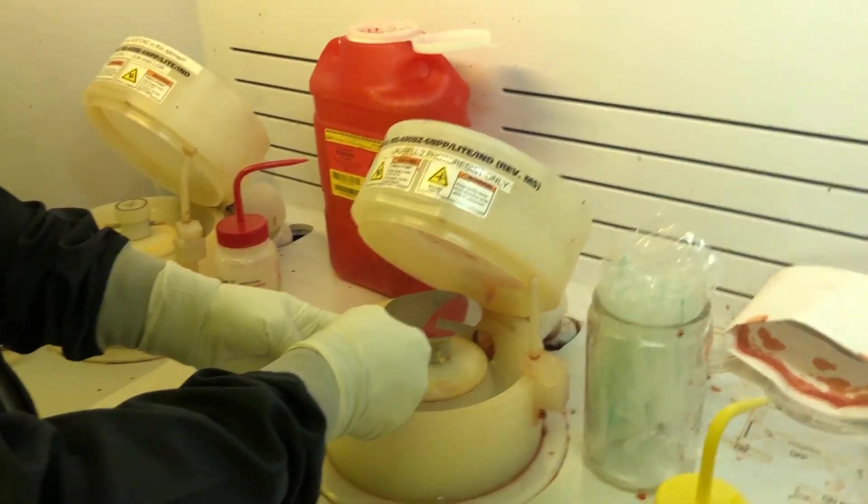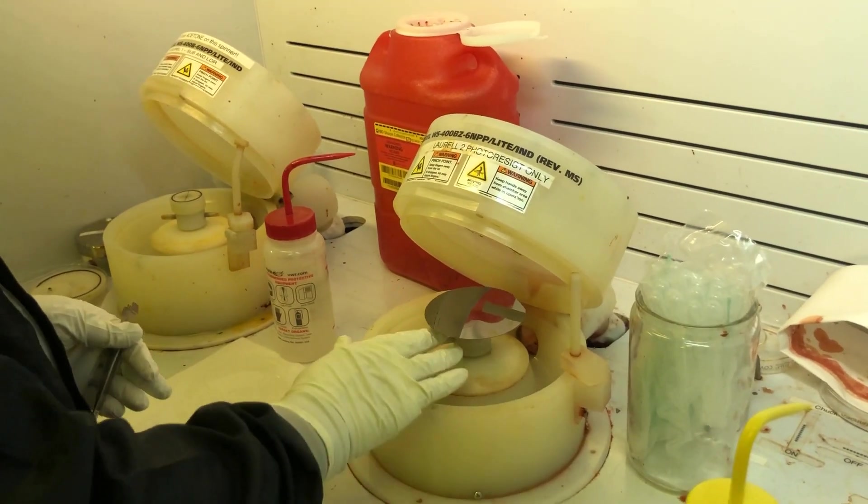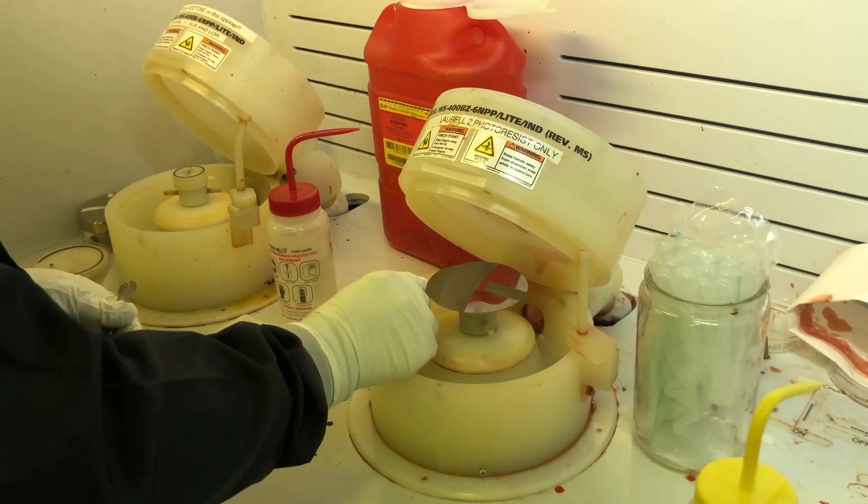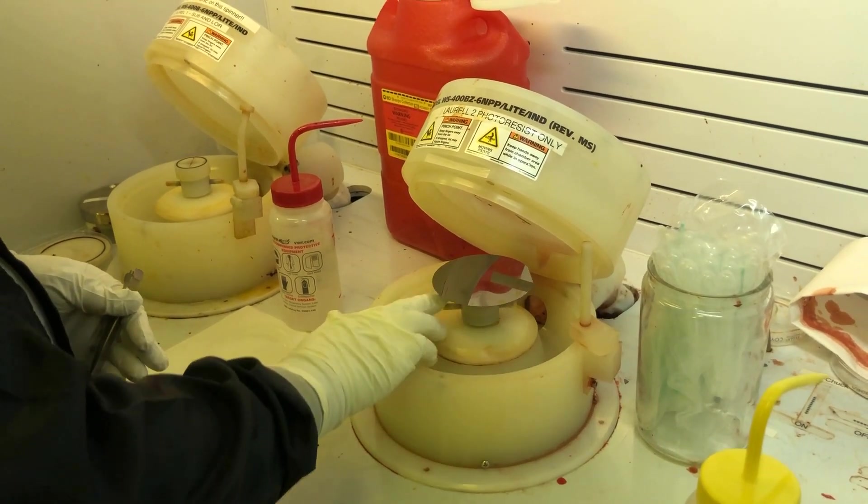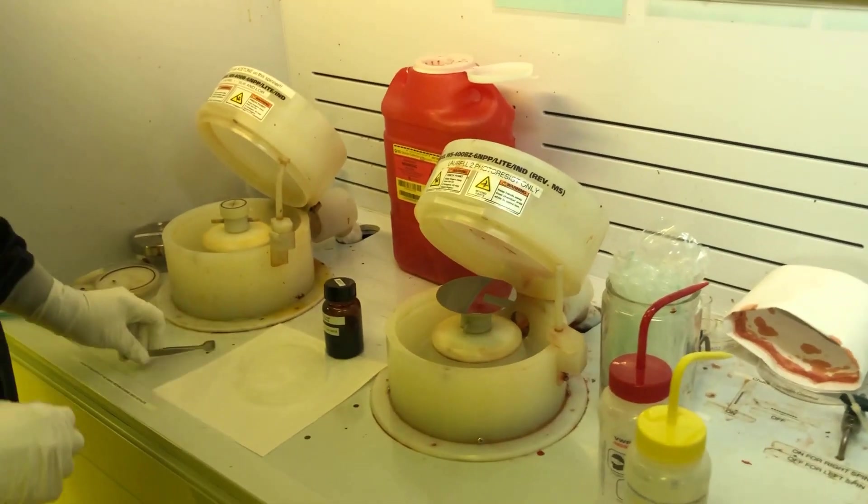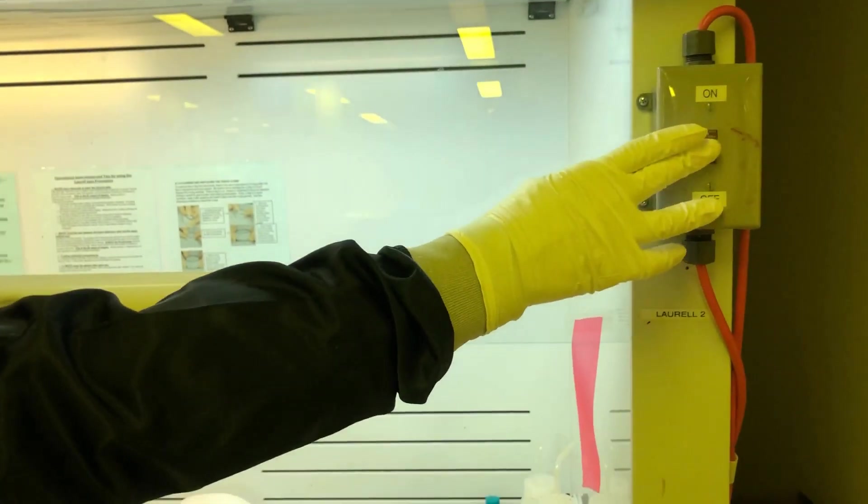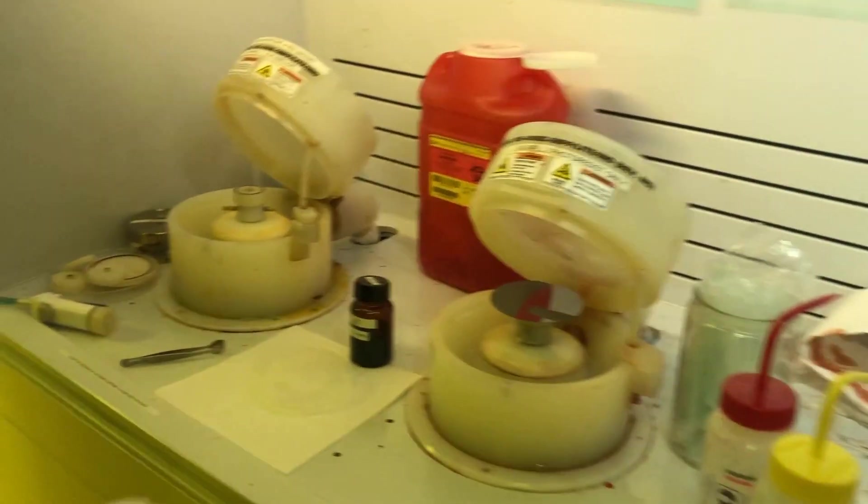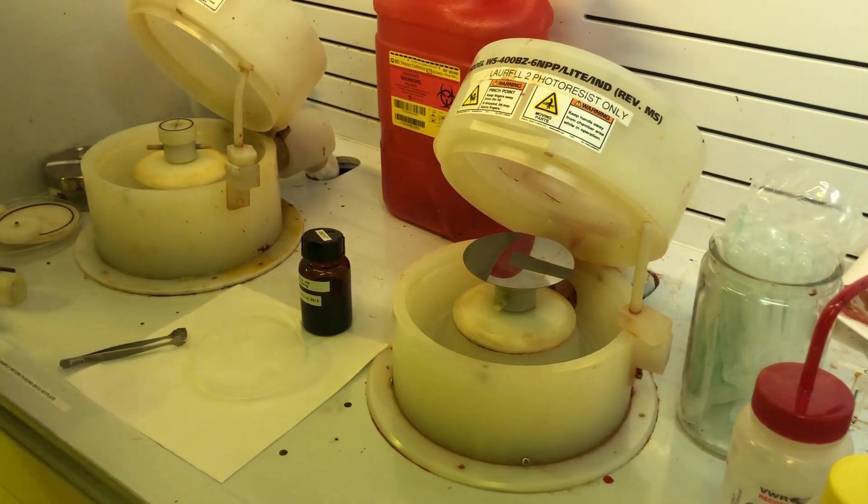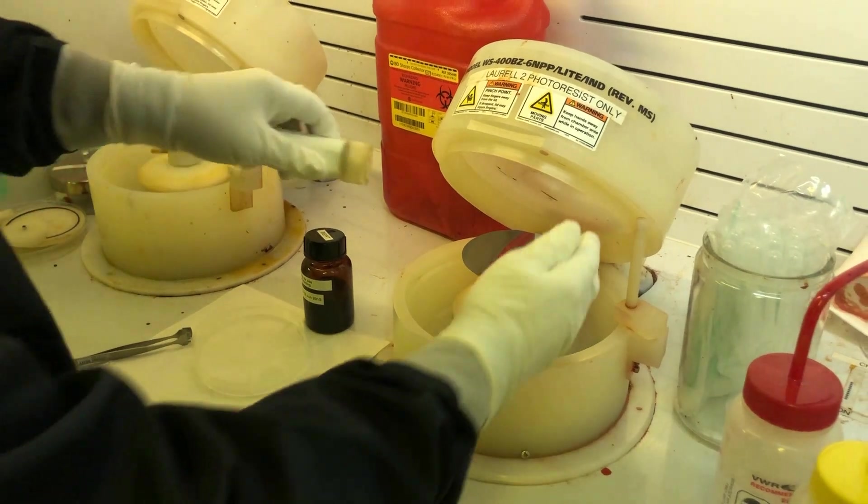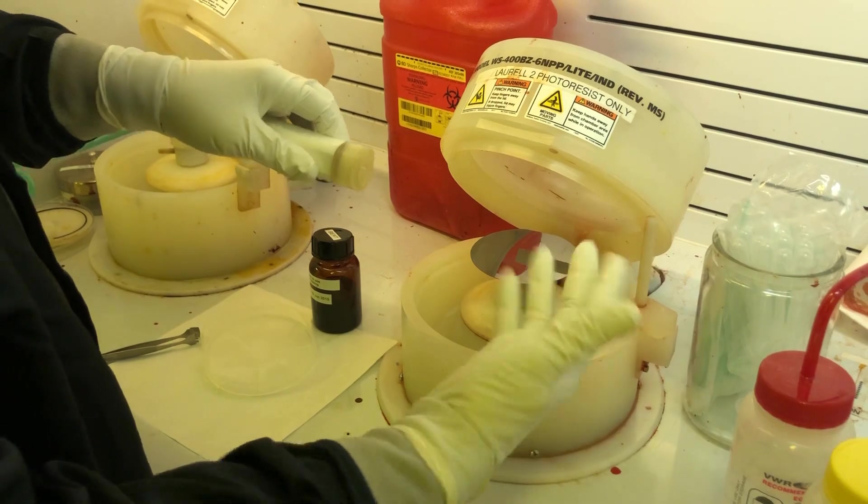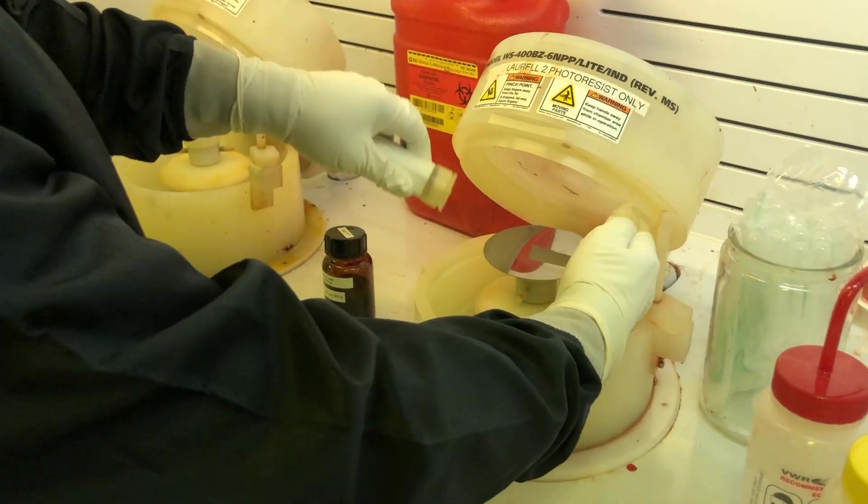Center your sample. After placing your sample in the center of the chuck, apply your vacuum. Then verify that the wafer is secure. Take your nitrogen gun and lightly blow off the surface of the wafer. I'm using my hand so that I can feel the nitrogen going across the sample.